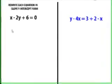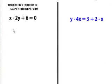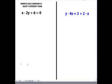In this example, we are going to rewrite each equation in slope y-intercept form. We are going to write each of these equations in the form of y equals mx plus b.